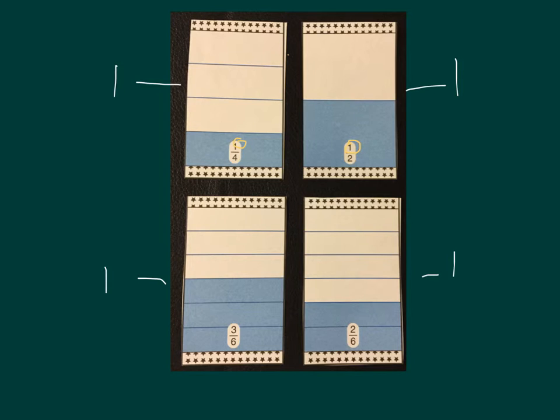Some cards will have the same denominator, but different numerators, just like the bottom two cards. Notice they both have a denominator of six. This means that each card is split into the same amount of parts, but a different amount of parts are shaded in. In this case, three are shaded in compared to two.